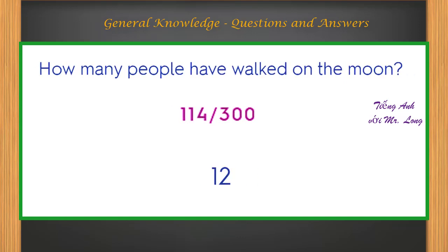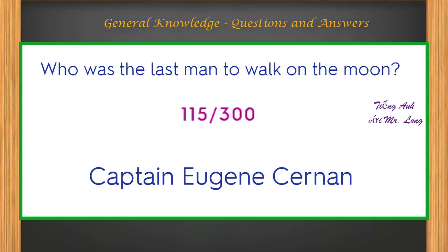How many people have walked on the moon? 12. Who was the last man to walk on the moon? Captain Eugene Cernan.